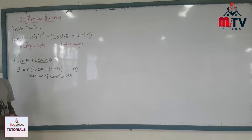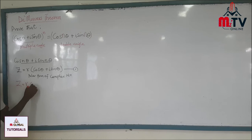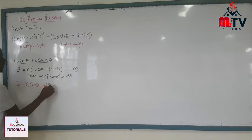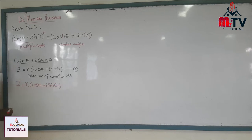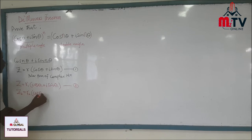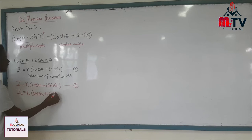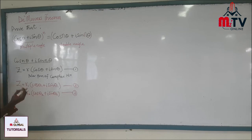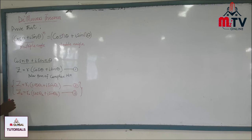We are going to give two complex numbers in polar form. z₁ is equal to r₁(cosθ₁ + i sinθ₁). z₂ is equal to r₂(cosθ₂ + i sinθ₂). We call this Equation 3.